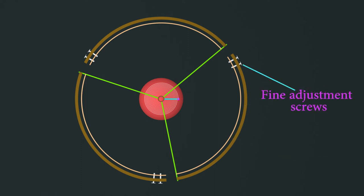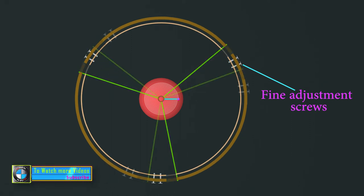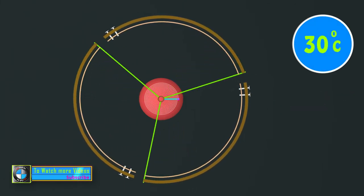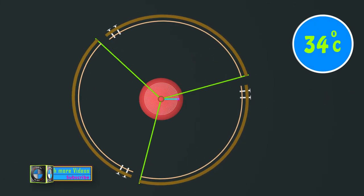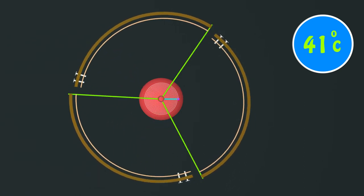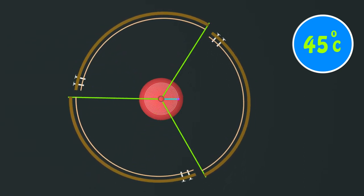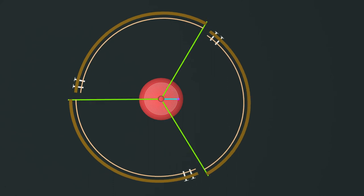Two fine adjustment screws are used to maintain the gap and the radius of the wheel. When the temperature rises, the expansion of the spoke occurs, which is counterbalanced by the inward bend of the bimetallic strip. And hence, the radius of the wheel remains the same.